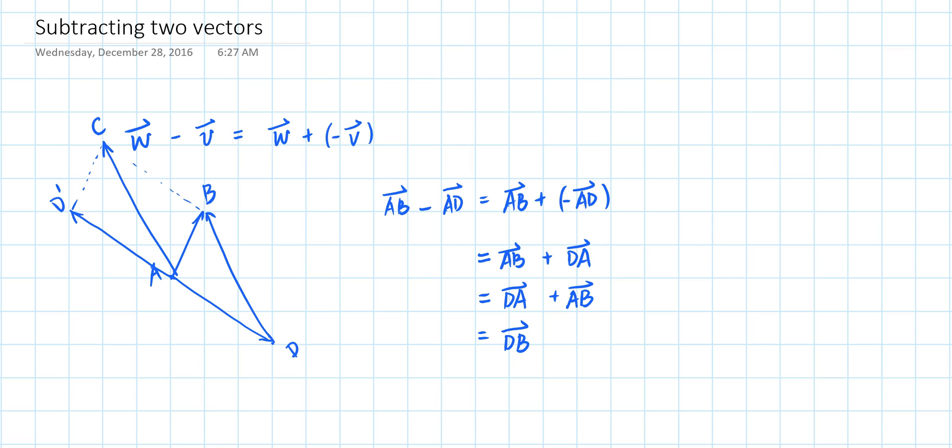You can see from the graph that this shape ADBC is also a parallelogram and therefore vector DB is equivalent to vector AC. So the difference of two vectors AB and AD sharing the same initial point A is the vector DB that connects the two terminal points.